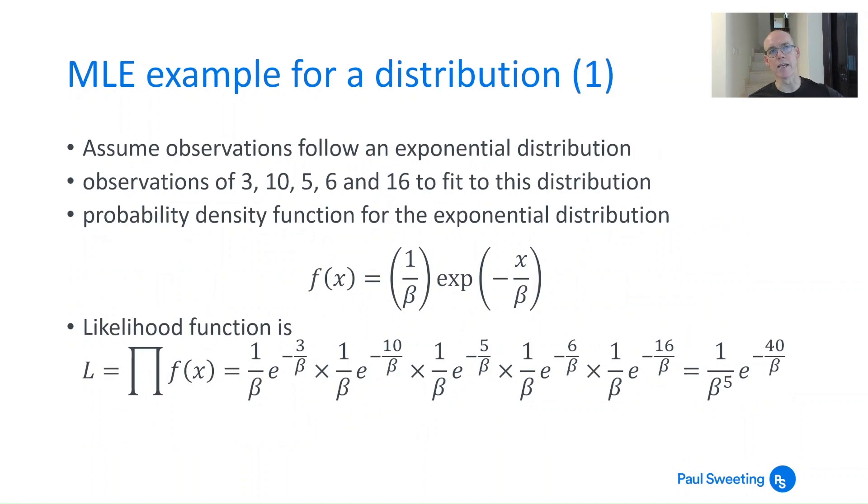Let's look at an example of MLE on a statistical distribution. Assume we've got some observations that follow an exponential distribution—the observations are 3, 10, 5, 6, and 16—and you want to fit them to the exponential distribution to find the parameter. The probability density function is f(x) = 1/β times e^(-x/β).